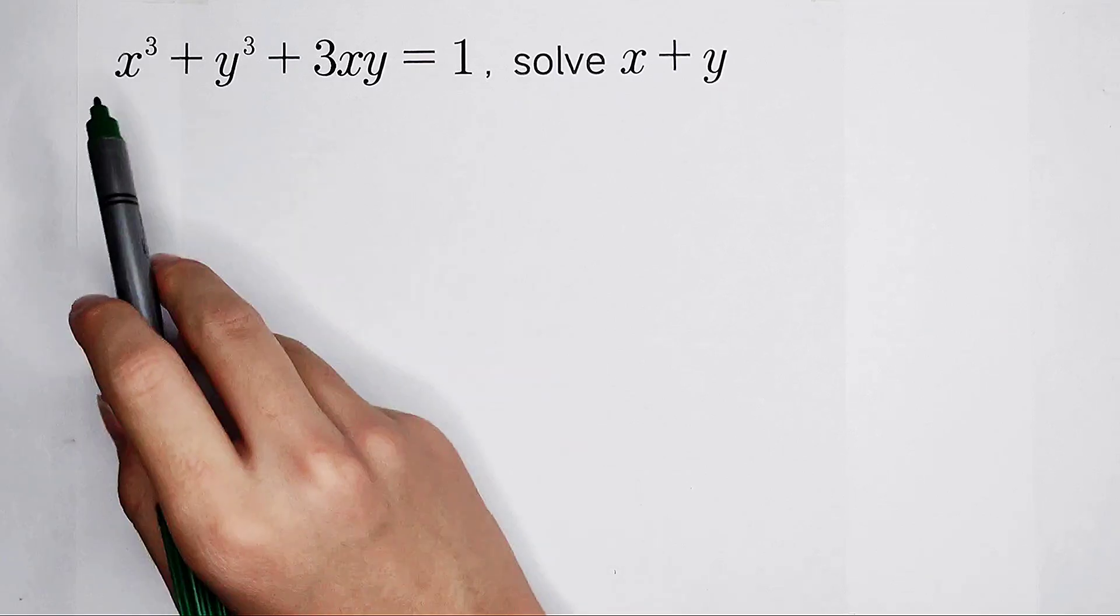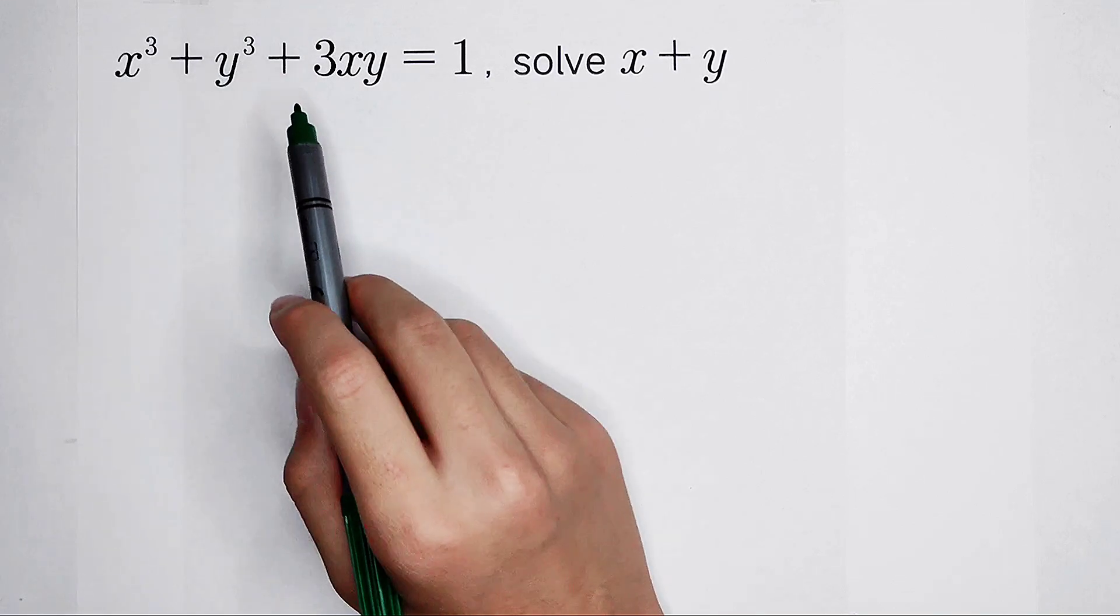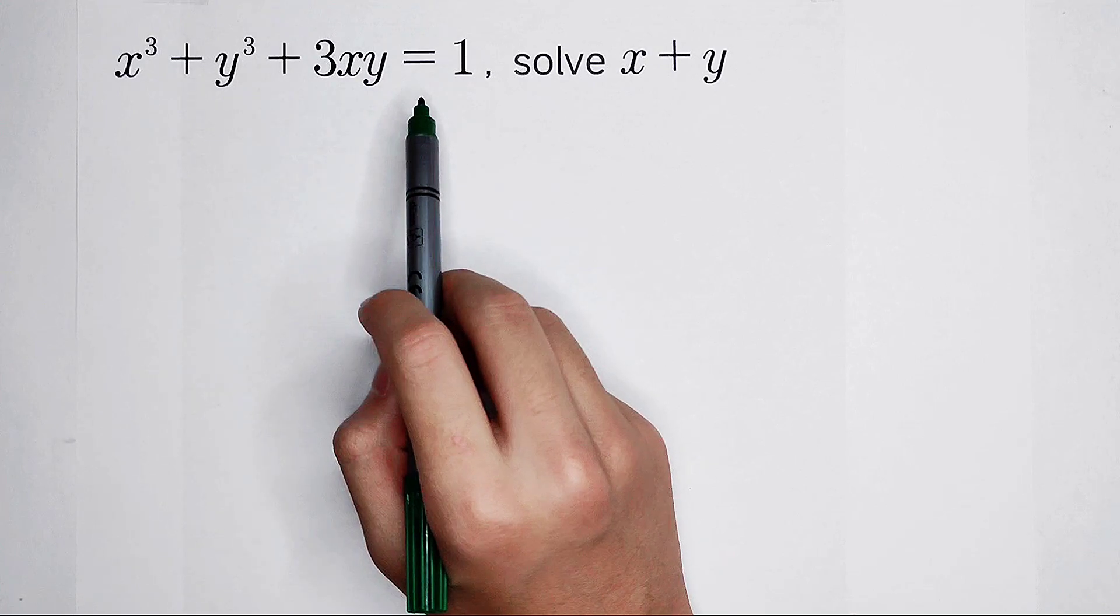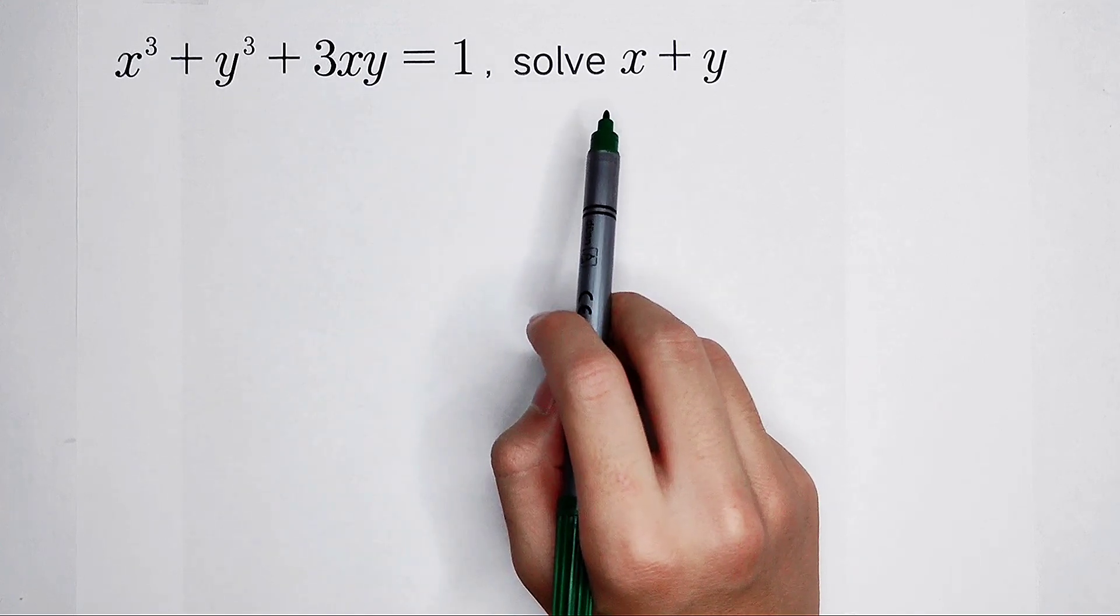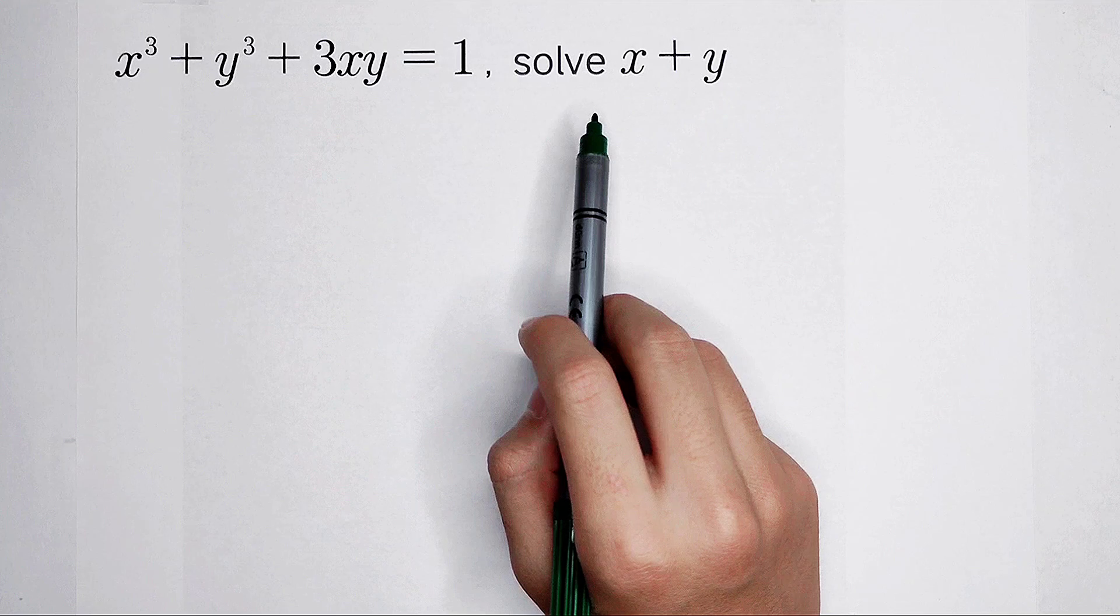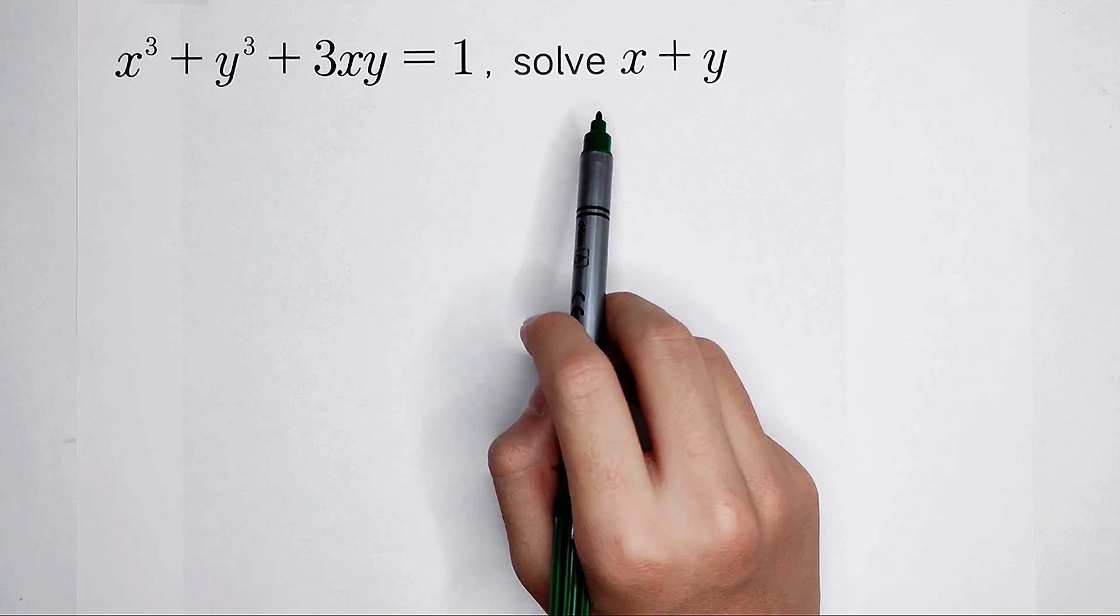Welcome back to Math We Know. x cubed plus y cubed plus 3xy equals 1. We have to solve the value of x plus y. It is not very easy to solve it. Which way should we use?